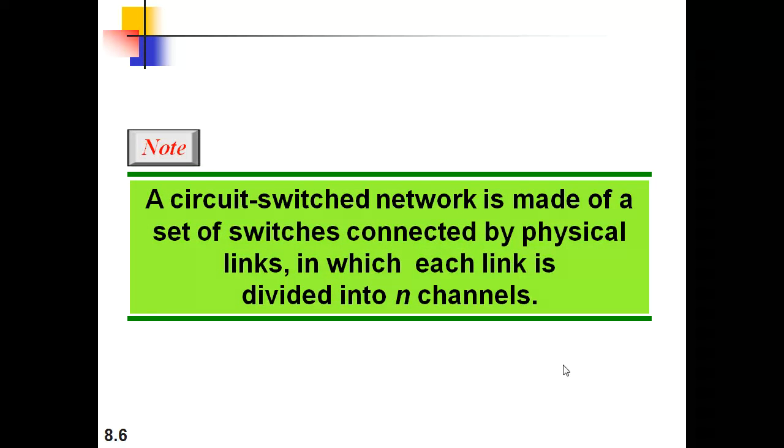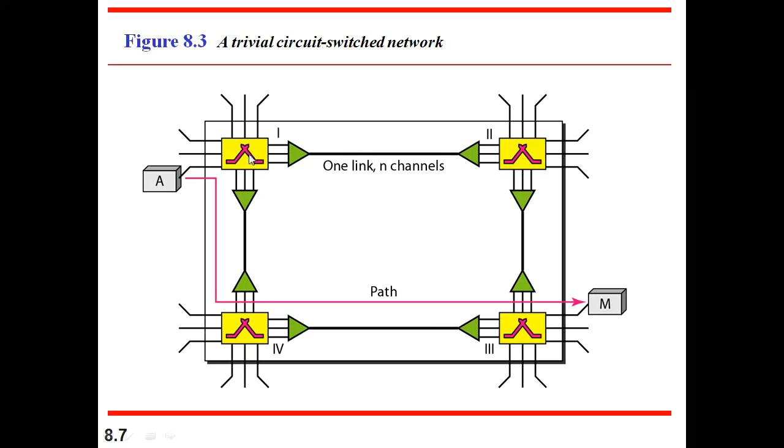Here, we will see a circuit switch network is made of a set of switches connected by physical links in which each link is divided into N channels. In the diagram we can observe switches: switch 1, 2, 3 and 4, and these are the end systems. A and M are the end systems. And how they are connected? Each switch is connected with a link. And this link is containing multiplexed N channels. You can observe, three channels are multiplexed and made as one link. And here also, demultiplexing is applied. One link is made as three channels. So, in this way, this particular technique is applied here.